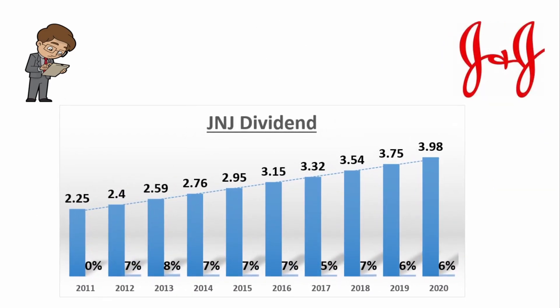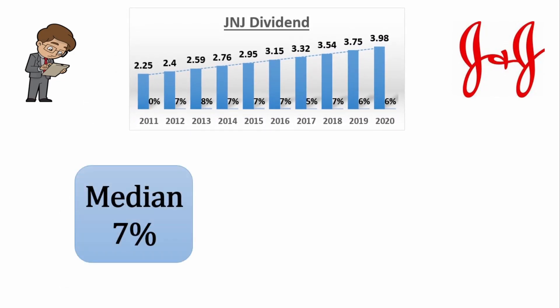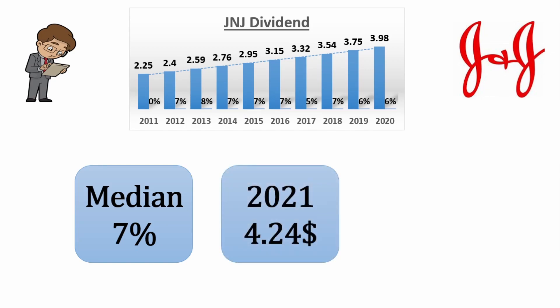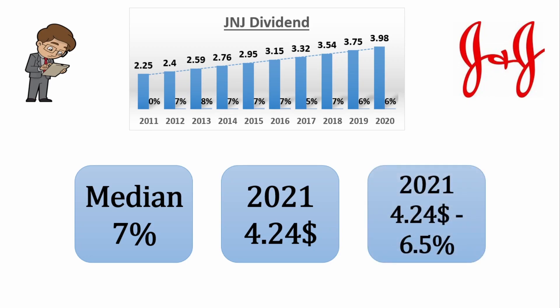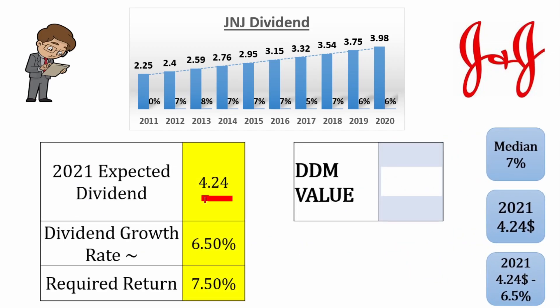Let's try another example — Johnson & Johnson, also one of my favorites. We can see they're growing their dividend very steadily. The median dividend growth rate is 7%, the 2021 dividend is expected to be $4.24, and the 2021 growth rate is expected to be 6.5%. Applying those inputs into the model gives a fair value of $451 — but the current price is $169.25. Something went seriously wrong. Using a growth rate of 6.5% indefinitely means Johnson & Johnson's dividend would grow to a huge number — that doesn't make sense.